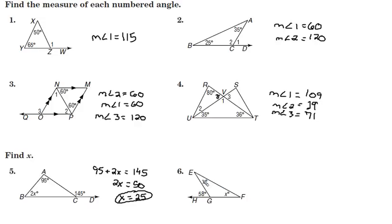And I know x plus x, the two remote interior angles added together, will equal the exterior angle, 58. 2x equals 58. Divide both sides by 2. x equals 29.